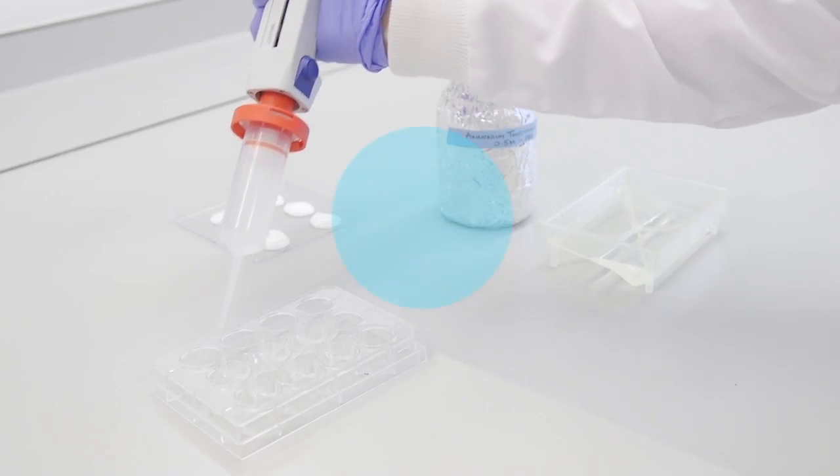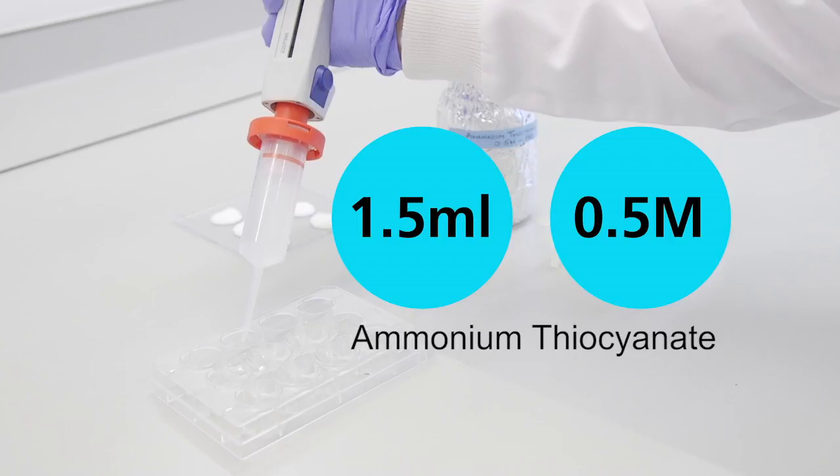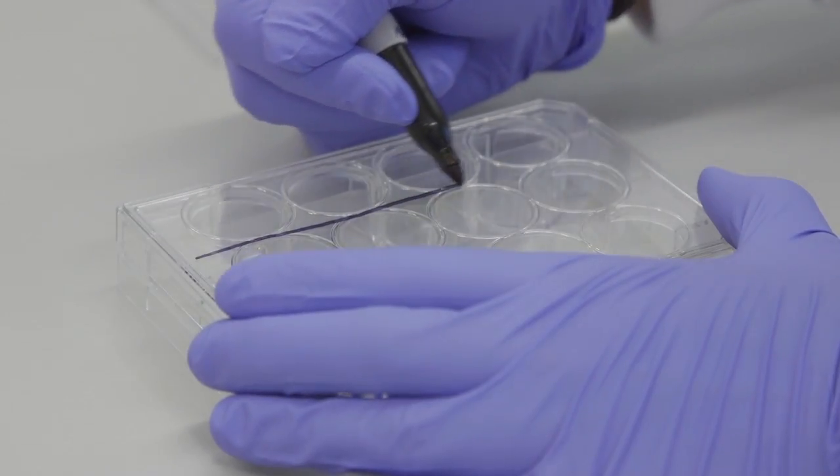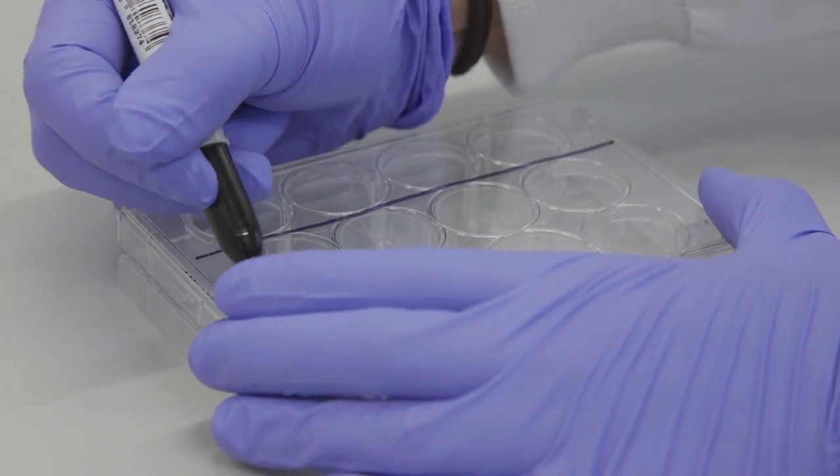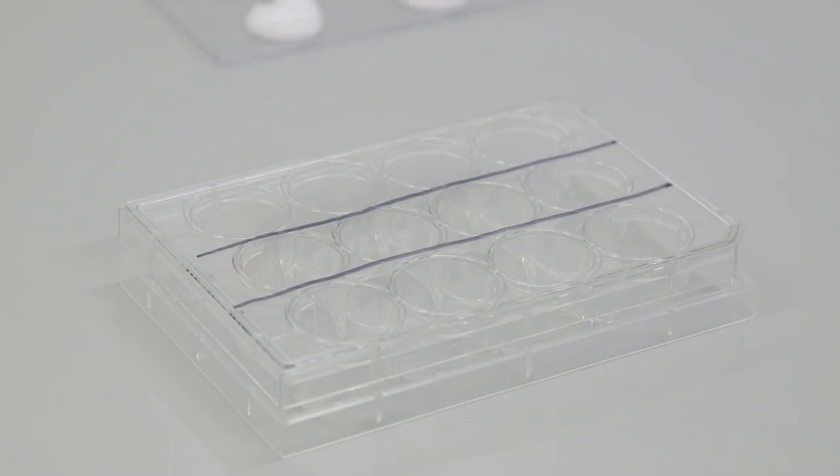12-well plates are filled with 1.5 milliliters of 0.5 molar ammonium thiocyanate per well. 4 wells are required for each set of mouse ears therefore 3 sets of ears will fit onto one plate. If you will need more than one plate it is a good idea to number them.